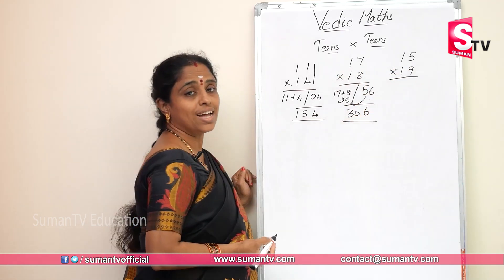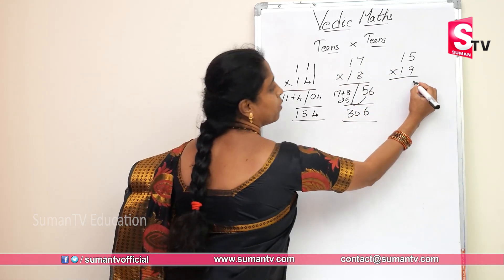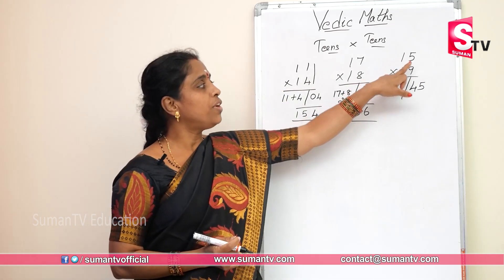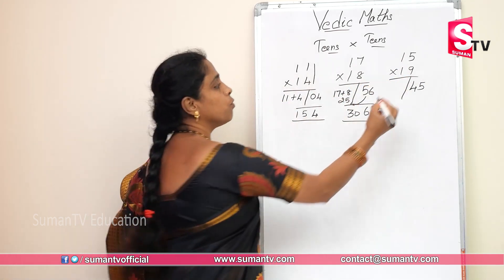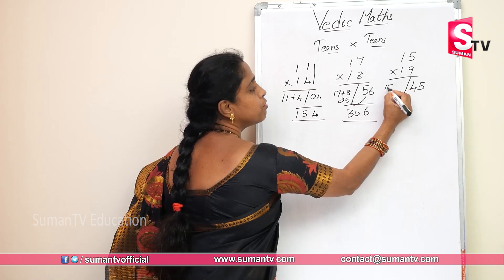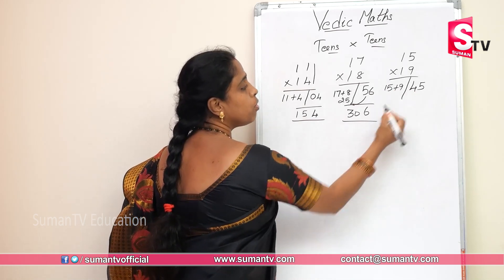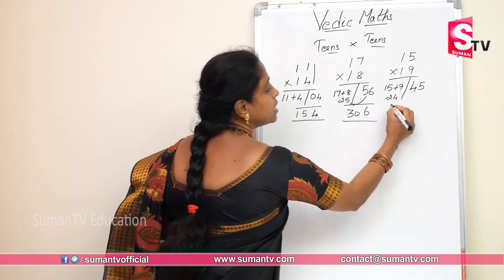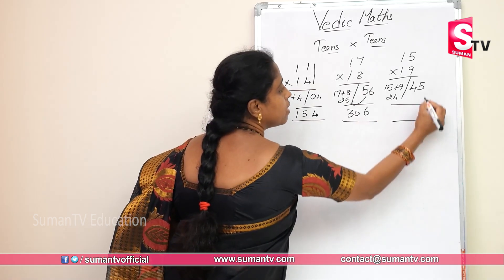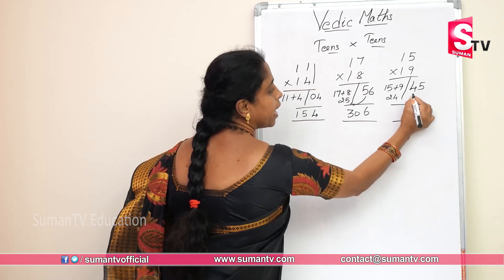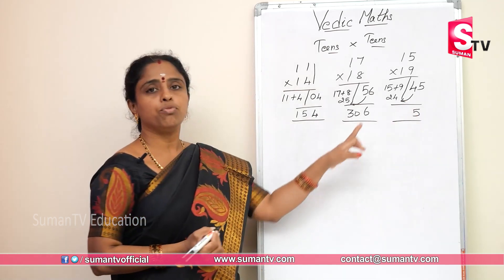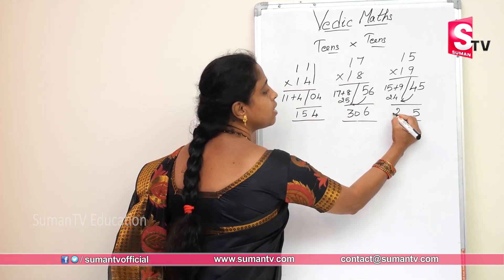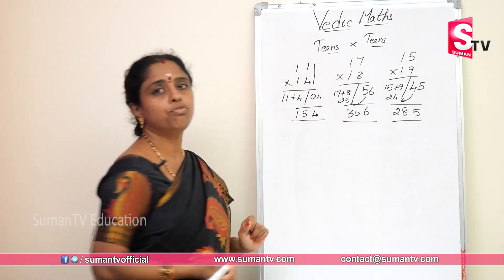Here 9 fives are 45. 15 plus 9 — you will be getting 24. Now the answer will be: drop this 5 here and carry over this 4 to 24. 24 plus 4 — what is the answer? 285.